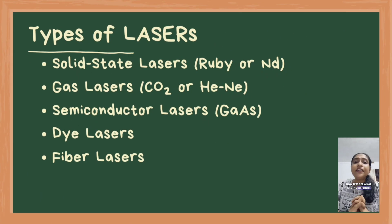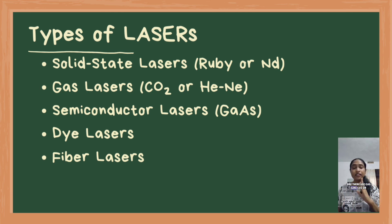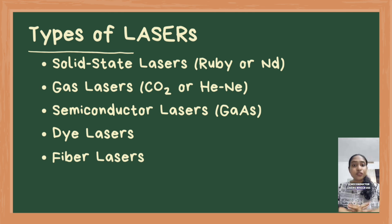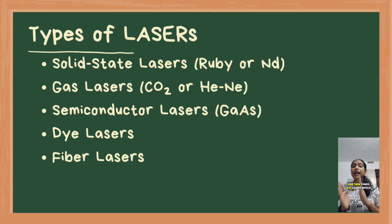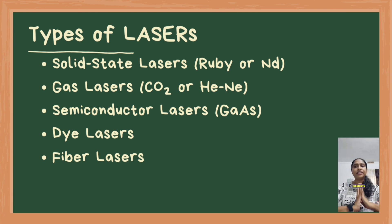Now let's see the different types of lasers. There are solid state lasers, which use a solid medium like ruby or neodymium. Gas lasers use gas like CO2 or a helium-neon mixture. Semiconductor lasers use semiconductor materials like gallium arsenide. Dye lasers use organic dyes as the medium. And fiber lasers use optical fibers doped with rare earth elements.